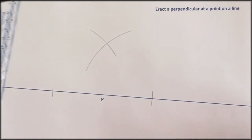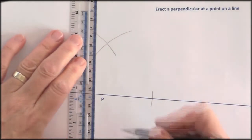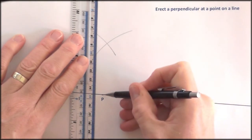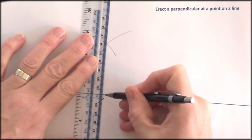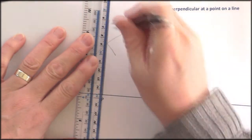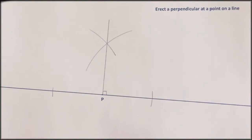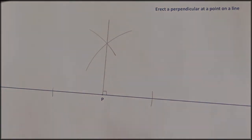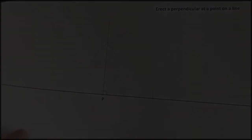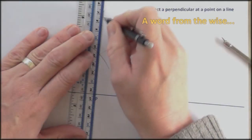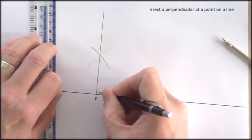Now because that intersection point is on the perpendicular bisector, when I join it to P I will get my perpendicular as required. And then joining those up will give me the required perpendicular.